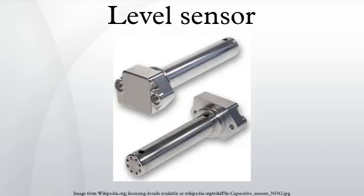Conductive level sensors are ideal for point level detection of a wide range of conductive liquids such as water, and are especially well suited for highly corrosive liquids such as caustic soda, hydrochloric acid, nitric acid, and ferric chloride. For corrosive conductive liquids, the electrodes need to be constructed from titanium, Hastelloy B or C, or 316 stainless steel, and insulated with spacers, separators, or holders of ceramic, polyethylene, and Teflon-based materials. Multiple electrodes of differing lengths can be used with one holder. Since corrosive liquids become more aggressive as temperature and pressure increase, these extreme conditions must be considered when specifying these sensors.